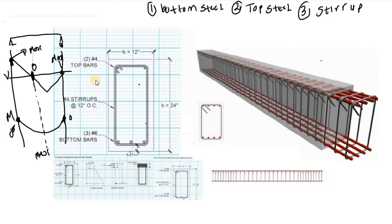How do you get these values — the diameter of the bars, how many bars to place at the bottom and top, and the stirrup spacing? All of these values can be obtained by designing the beam. You can design the beam manually or using software such as ETABS, SAP 2000, StaadPro, Protoss, STAAD, RAM, and others. I'll be explaining how to design a beam manually and using software in future videos.